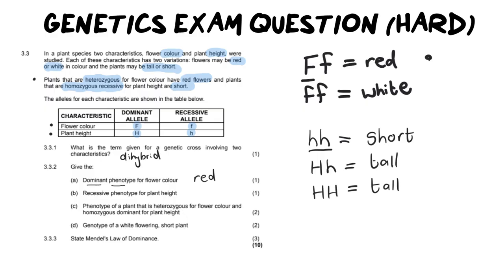Then it says, give the recessive phenotype for plant height. The recessive phenotype is going to be short, which we calculated over here.